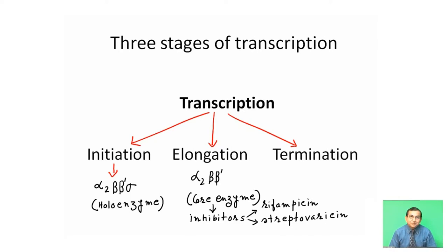Beta and beta prime carry out the catalytic function, that is, the elongation process, while alpha 2 binds the core enzyme. There are some inhibitors which prevent the elongation process.